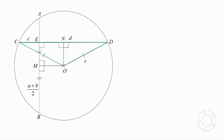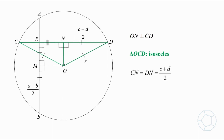Likewise, because ON is perpendicular to CD and triangle OCD is isosceles, therefore CN is equal to DN, which is (c + d) / 2.